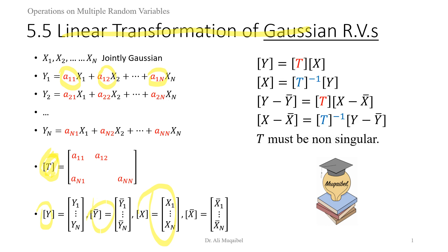We can use vector notation to represent the equations: Y equals T multiplied by X, or inversely, X equals the inverse matrix of T multiplied by Y. They are also related by subtracting the average — we can write X minus X-bar in terms of the inverse function. These are different ways of writing the relation.